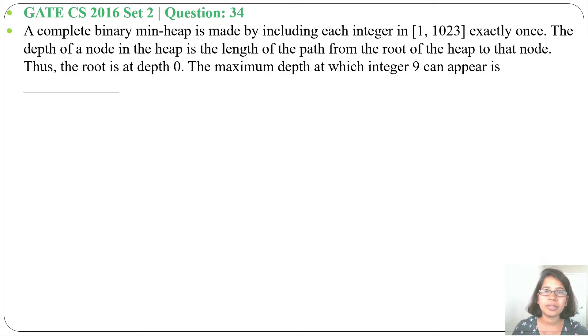Hi, let's hop on previous question of heap. This question was asked in GATE CS 2016 Set 2, question number 34. A complete binary min-heap is made by including each integer in the range 1 to 1023 exactly once. The depth of a node in the heap is the length of the path from the root of the heap to that node. Thus the root is at depth 0. The maximum depth at which integer 9 can appear is?